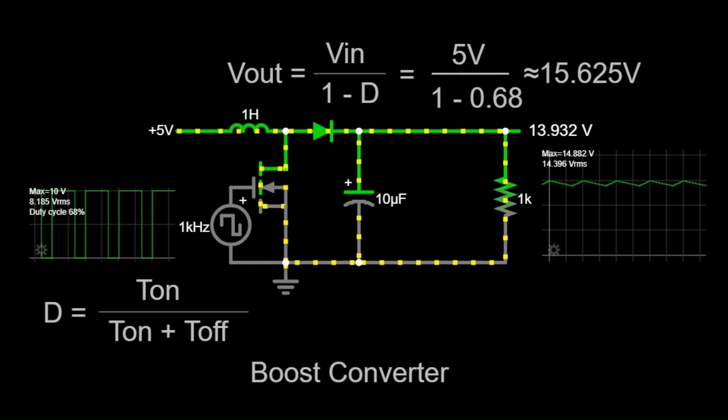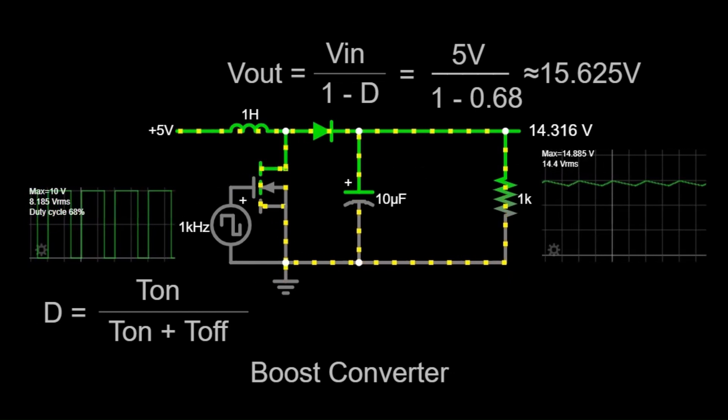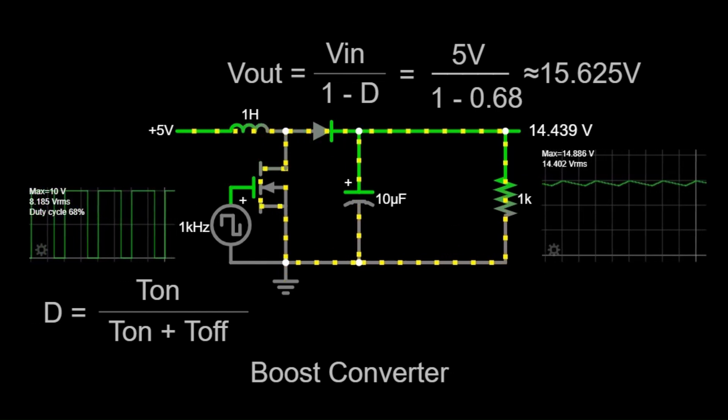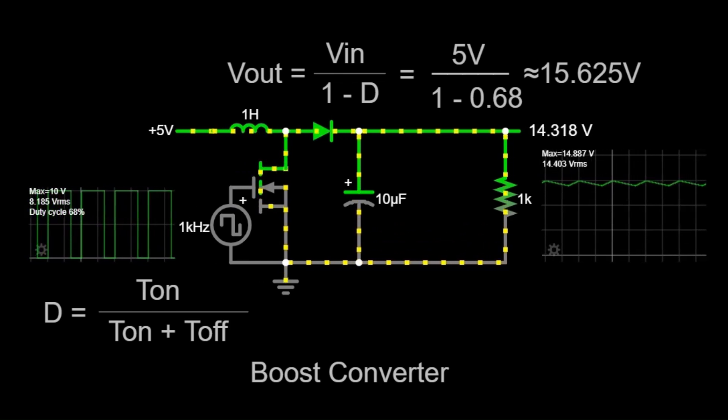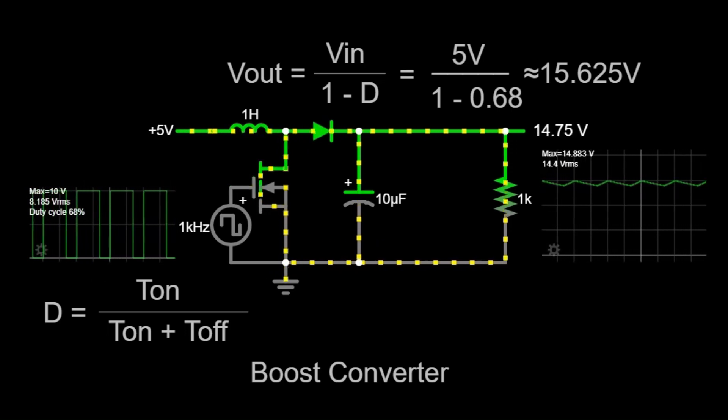However, in practical applications, the output voltage may slightly vary due to real-world inefficiencies and component tolerances. In our circuit, the measured output voltage is around 14.262 volts, with a maximum value of 14.878 volts and an RMS voltage of 14.395 volts.